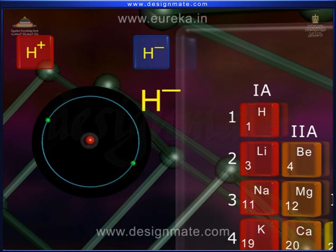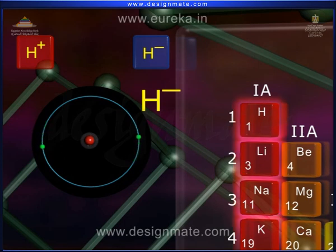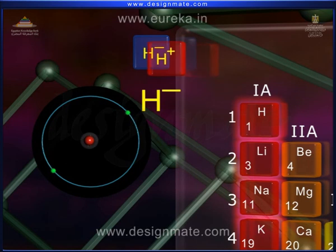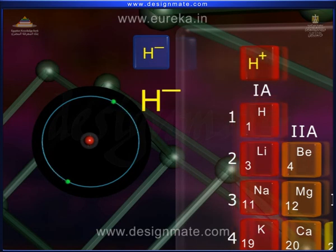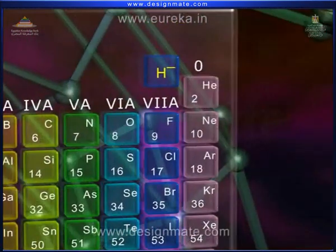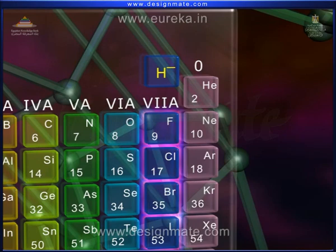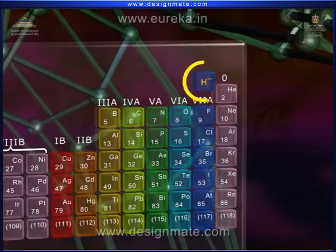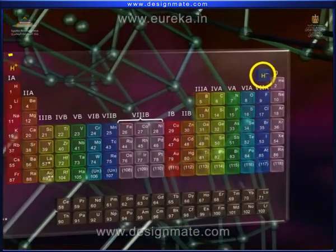Thus, in some aspects, it behaves like alkali metals and therefore it is placed in the 1A group. Whereas it resembles in some other properties with halogen elements of the 7A group. Hence, the position of hydrogen in the periodic table is a matter of discussion and dispute.